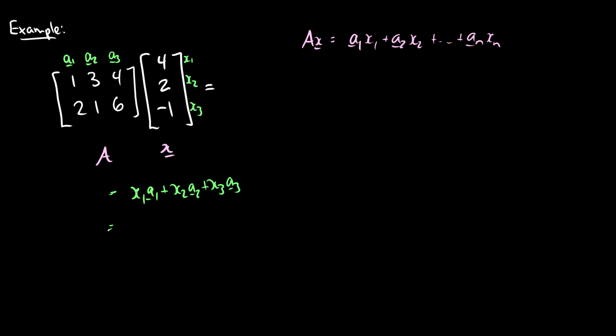So now we can substitute some values in. We see x1 is 4 and A1 is 1 2, that's the vector 1 2, x2 is equal to 2 times the vector A2 which is just 3 1, and x3 is negative 1, and the vector A3 is 4 6.